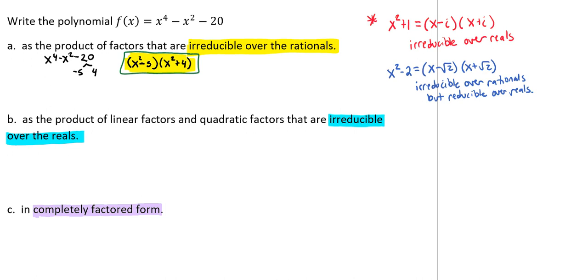Because if we took our x^2 - 5 and set it equal to 0, we would have irrational roots. And our x^2 + 4 would give us an imaginary number. So as the product of factors that are irreducible over the rationals, this is our solution.